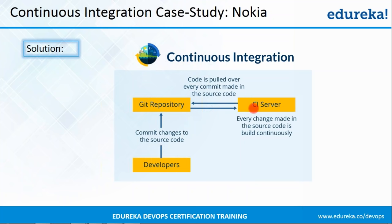Nokia adopted continuous integration as a solution. Developers commit changes to the source code in a shared repository. A continuous integration server pulls the repository for changes, and the moment any change is committed, the CI server pulls that code and prepares a build. If there's any bug, developers know which commit is causing the error — they can go through that particular commit to fix the bug. So locating and fixing of bugs became very easy compared to nightly builds. Before I move forward, let me give a quick recap: we saw why we need CI, how CI addresses those problems, what CI is, and then the Nokia case study of shifting from nightly build to continuous integration.